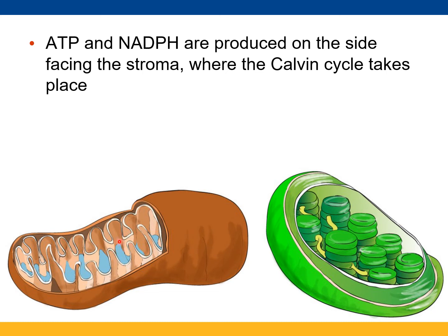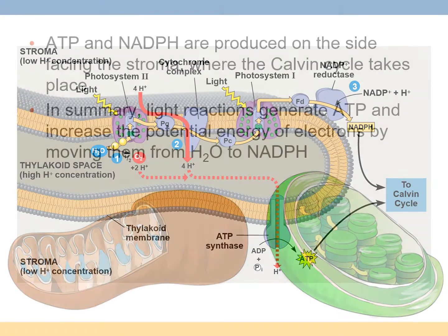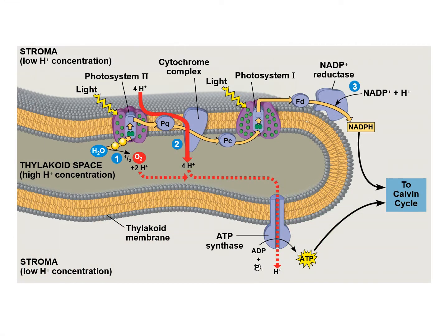In the case of mitochondria, the citric acid cycle is occurring inside the matrix. Light reactions generate ATP and increase the potential energy of electrons. We're making high-energy electrons that we store and transfer on NADPH by stealing them from H₂O and bumping them up, and we're also making ATP. Those two things — NADPH and ATP — are the drivers of the Calvin cycle.